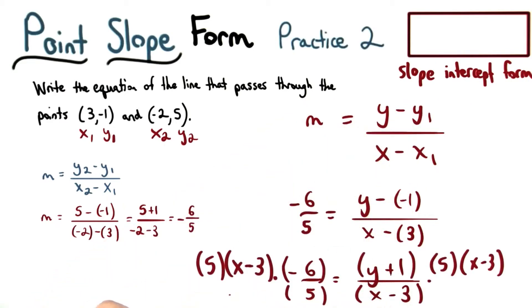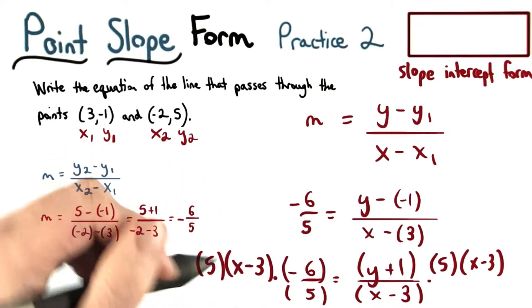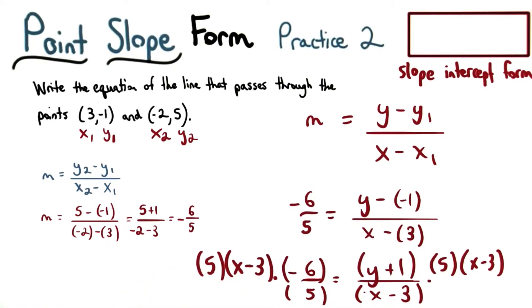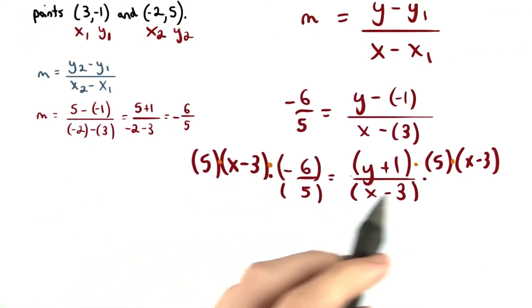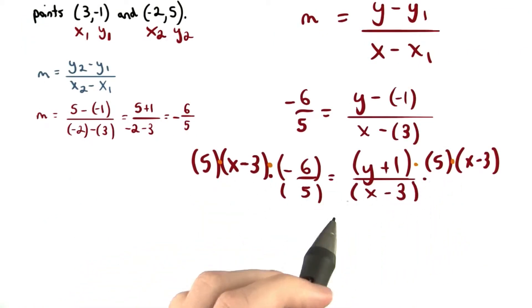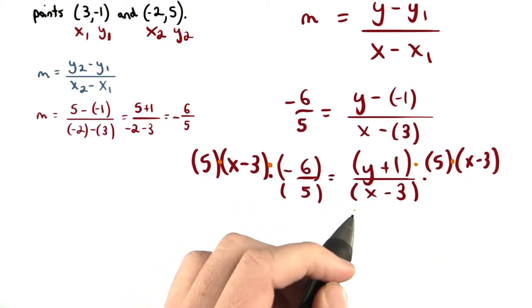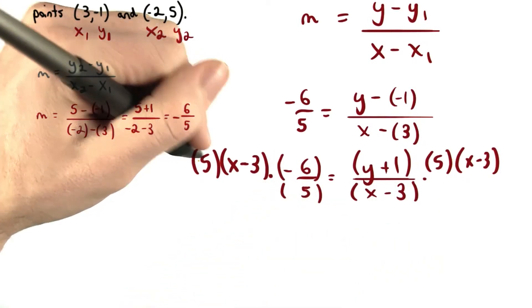I can multiply both sides by 5 times x minus 3. We do this since 5 times x minus 3 is the common denominator for these two fractions. Notice that we just have factors that appear in the numerator and also in the denominators. This x minus 3 is just one factor. We use these factors to help us simplify.